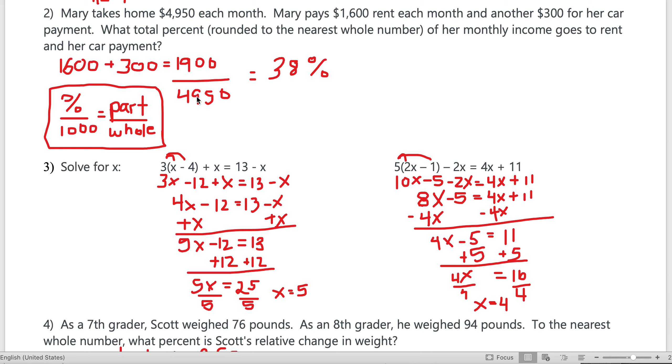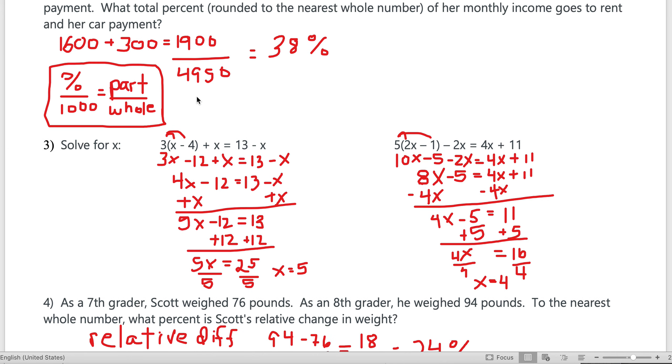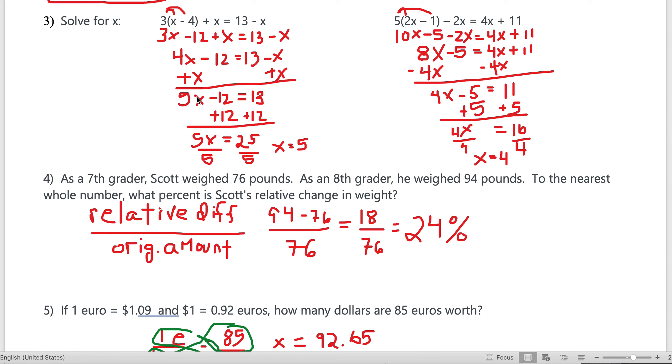Remember, percent is part over whole, so I do $1,900 divided by $4,950, which is 0.38 when I round it off. Then convert to a percent—38 percent.